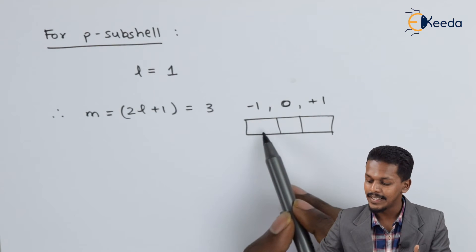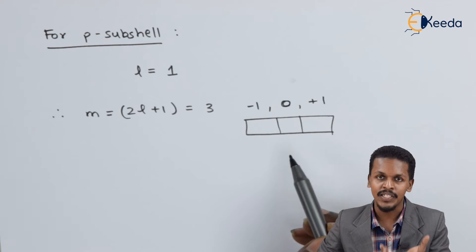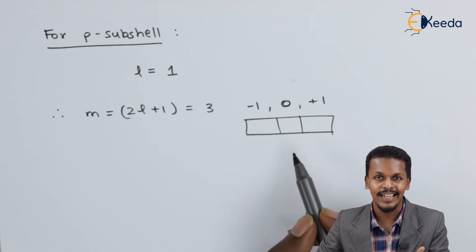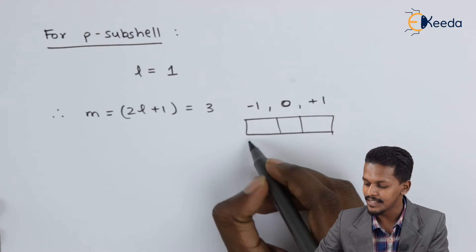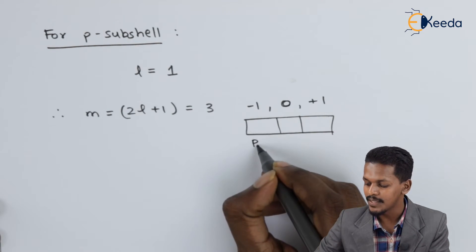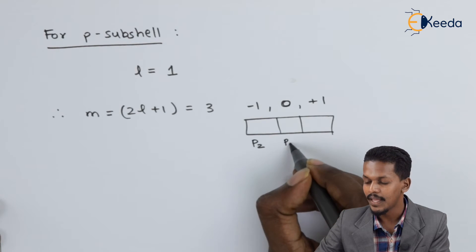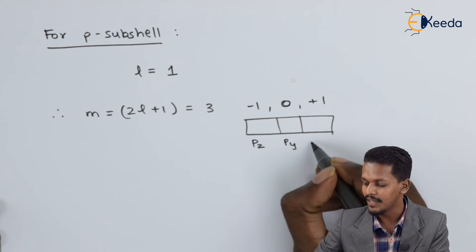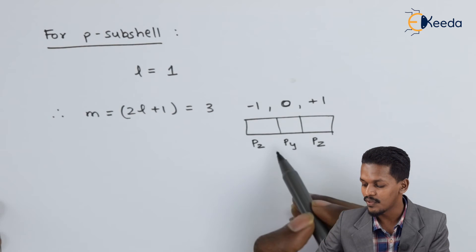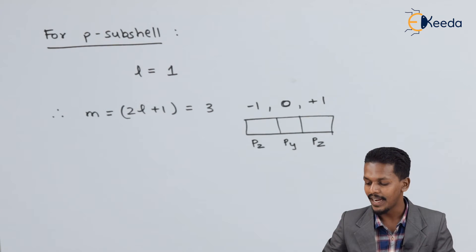These three orbitals have specific designations: they are called the Px orbital, the Py orbital, and the Pz orbital.